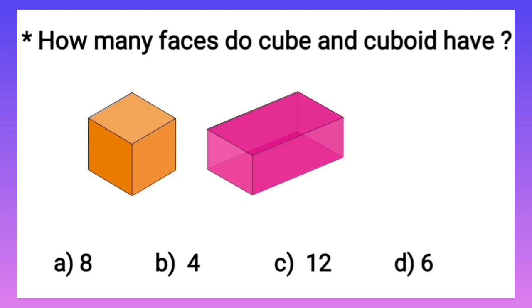Five and six. So children, there are six faces of cube and cuboid. Let's see which option is correct. Option A, eight - incorrect. Option B, four - again no. Option C, twelve - again incorrect. Option D, six - this is the correct one. Let's put a tick here.